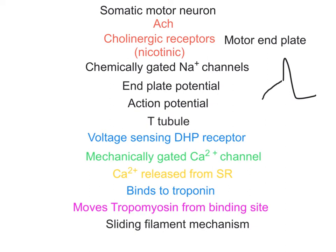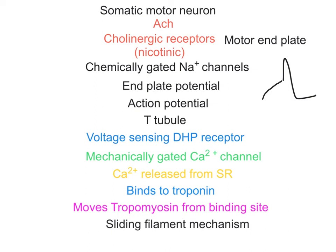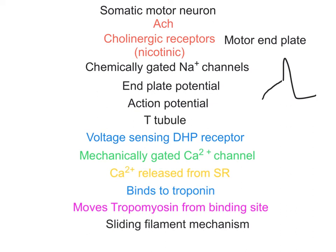That action potential spreads over the surface of the cell — the fiber — across the sarcolemma. In order to get down into the cell, it must go via the T-tubules, which are just an extension of the sarcolemma. As the action potential goes down the T-tubule, it affects a voltage-sensing receptor called the DHP receptor. It changes conformation and is mechanically linked to a mechanically-gated calcium channel in the sarcoplasmic reticulum. As a result, calcium is released from the sarcoplasmic reticulum into the sarcoplasm — or cytoplasm — where the myofibrils are.